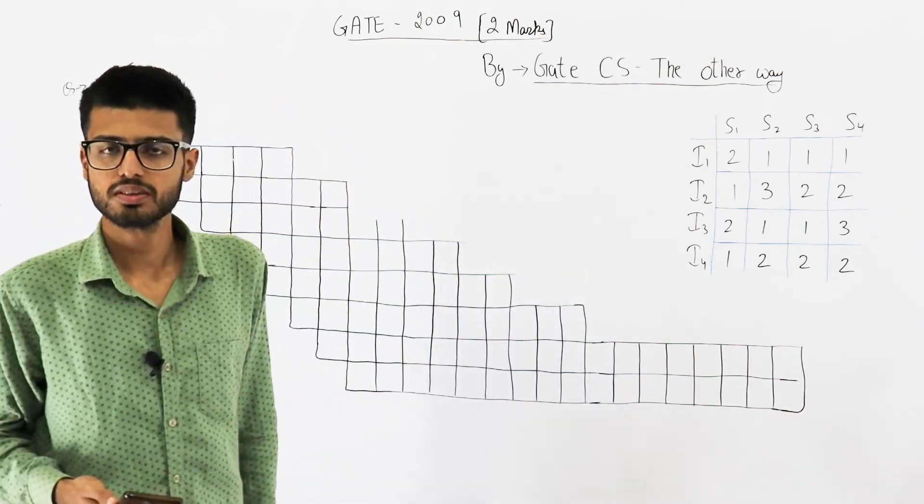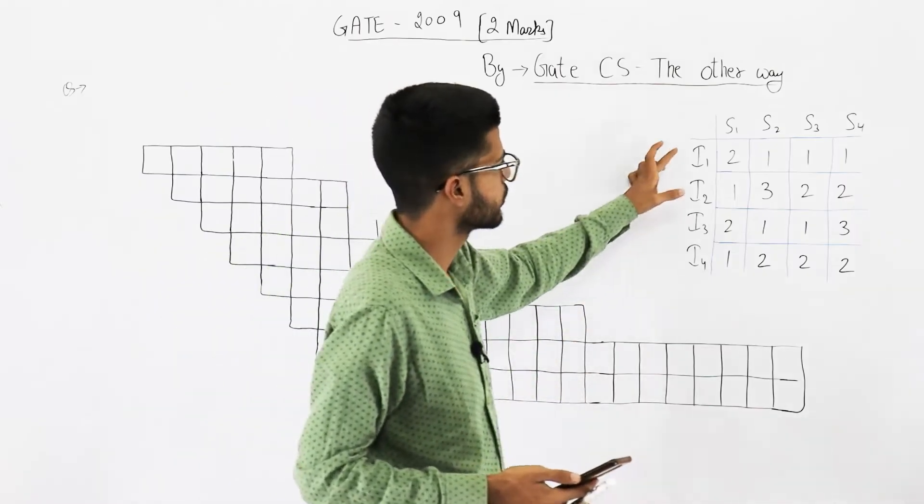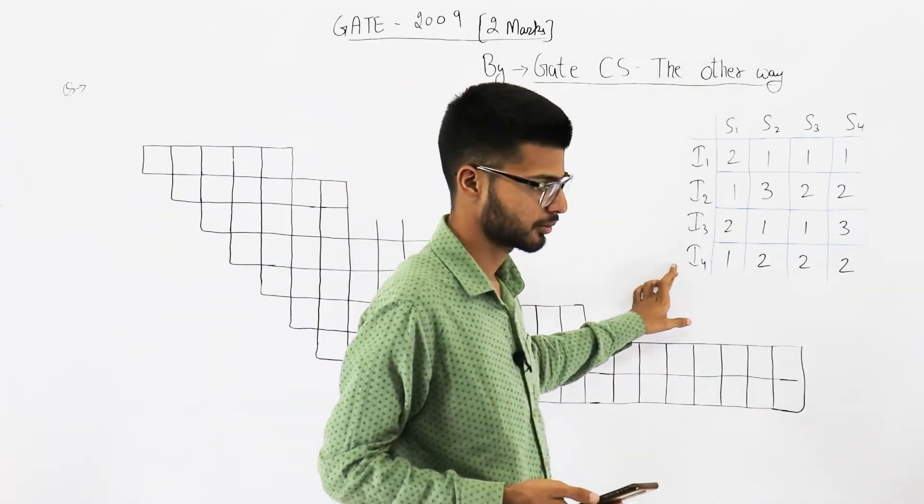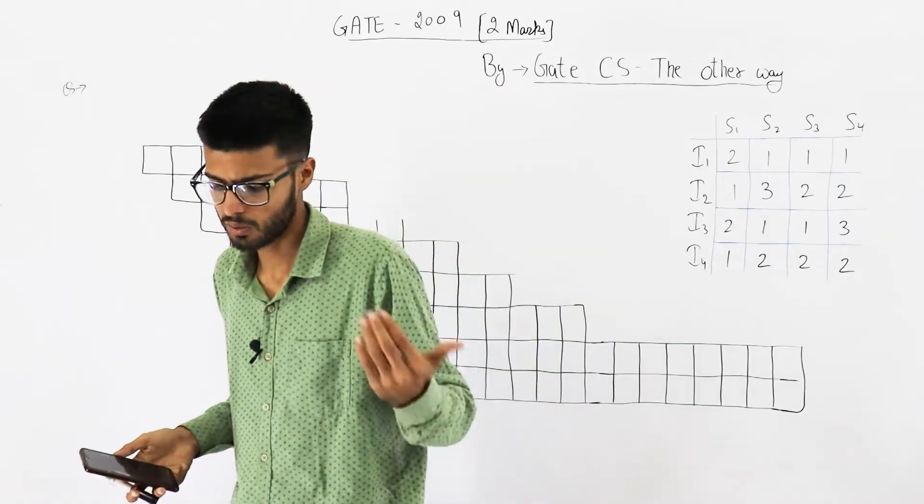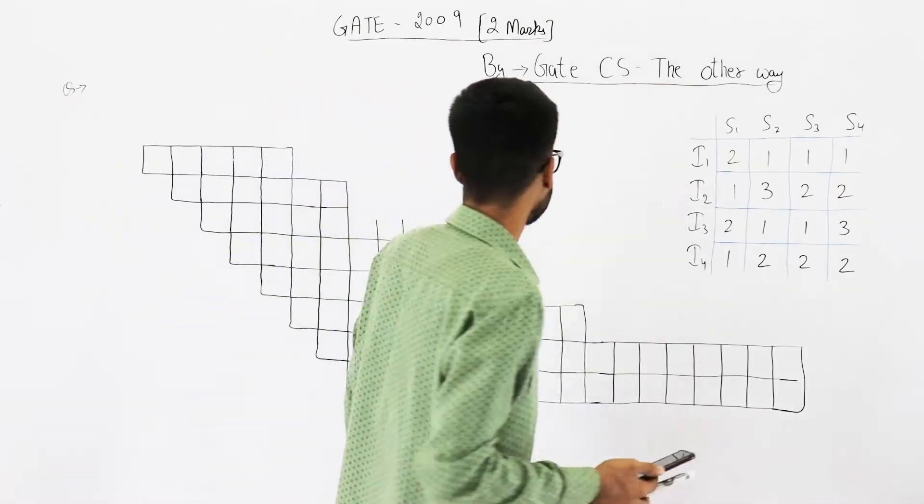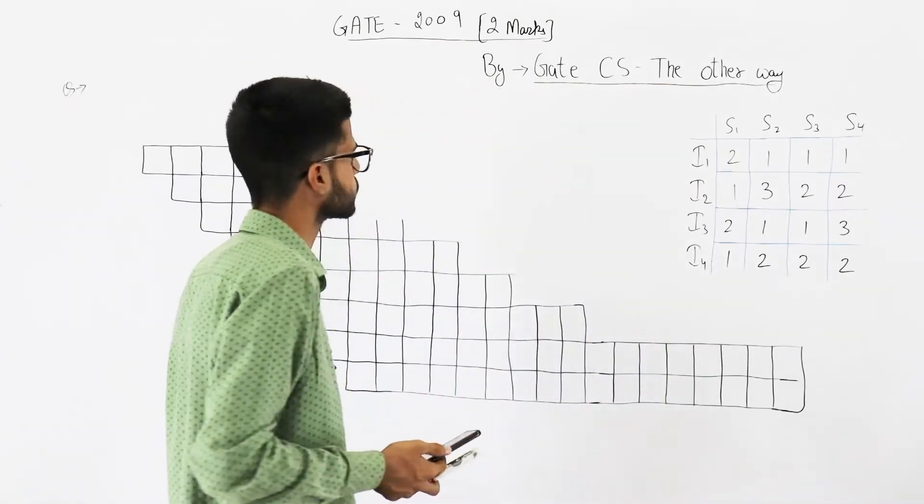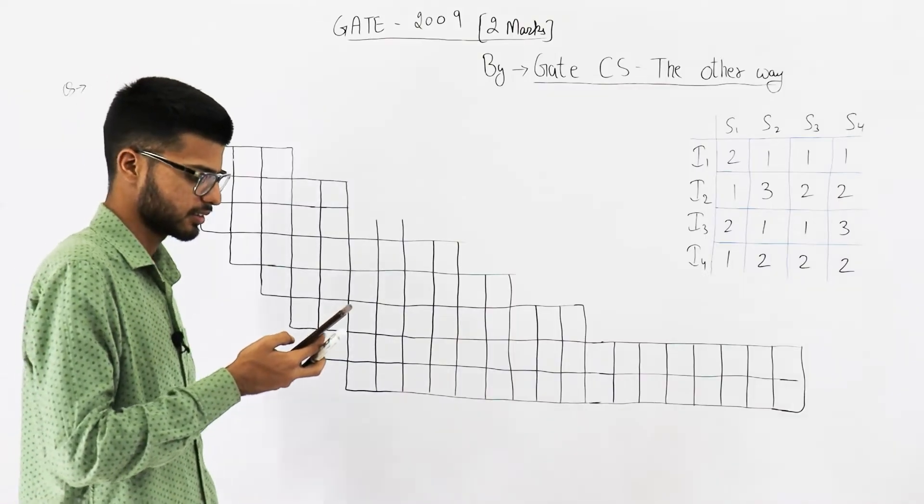Welcome back students. This question was asked in GATE 2009 exam. They have given you these four types of instructions and this tabular information regarding how many clock cycles each stage requires with respect to these four instructions. First of all, let's see the statement.